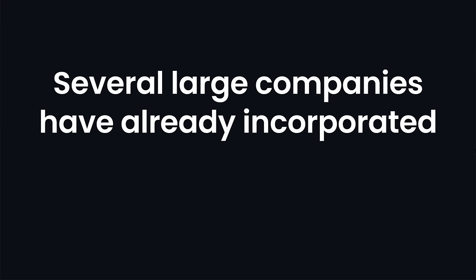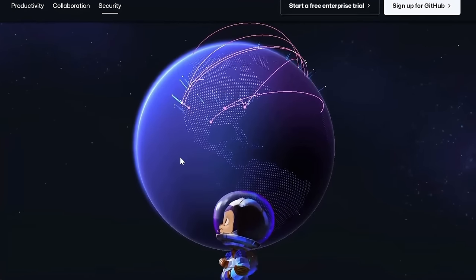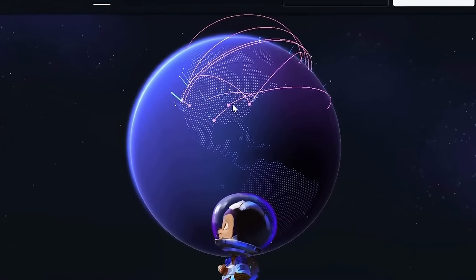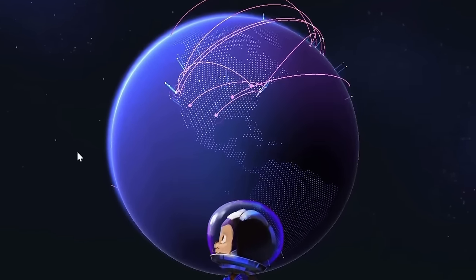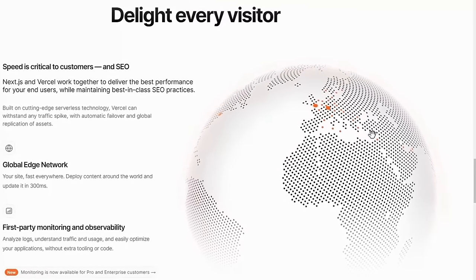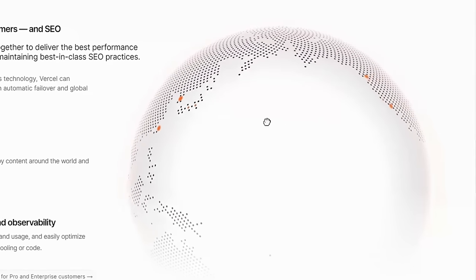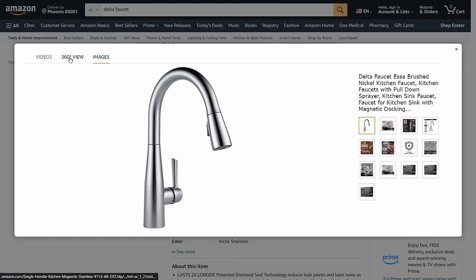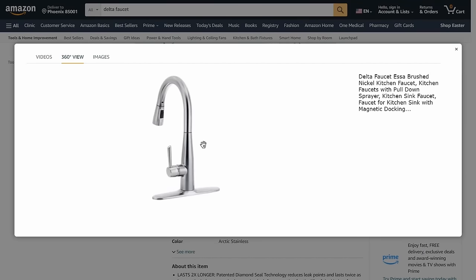These web applications are incredibly impressive and have practical applications for product showcase. Several large companies have already incorporated impressive 3D features into their products, such as GitHub, where we can see commits move around the globe in real time. Vercel, with their version of the globe, where you can move it around and see where websites are deployed. And Amazon, with their 3D product view.